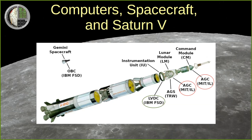One was installed in the Apollo Command Module, and another in the Lunar Module, or as it was originally called, the LEM. Later on, I'll have a few remarks about the Saturn V's computer as well. The AGC was developed by MIT's Instrumentation Laboratory, today known as Draper Labs, and manufactured by the Raytheon Corporation.